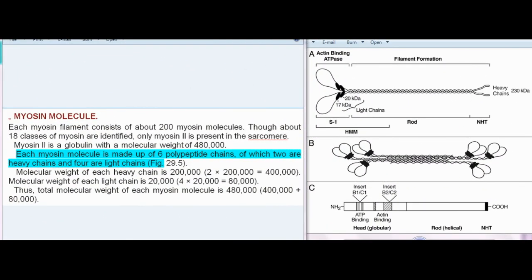Myosin Molecule: Each myosin filament consists of about 200 myosin molecules. Though about 18 classes of myosin are identified, only myosin-2 is present in the sarcomere. Myosin-2 is a globulin with a molecular weight of 480,000. Each myosin molecule is made up of six polypeptide chains, of which two are heavy chains and four are light chains. Molecular weight of each heavy chain is 200,000 (2 × 200,000 = 400,000). Thus, total molecular weight of each myosin molecule is 480,000 (400,000 + 80,000).